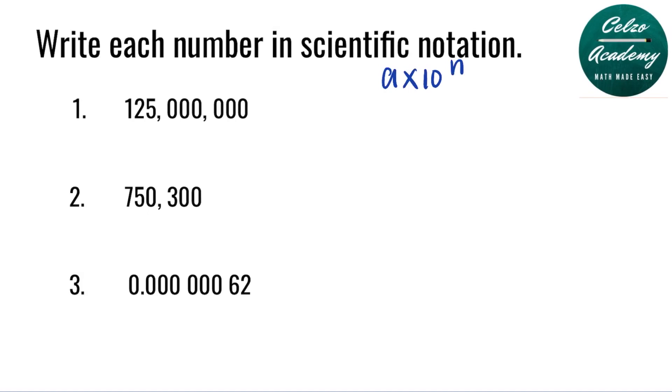Question number 1. 125 million. Since it is a whole number, that means that the decimal point is at the end of this number. Writing this in scientific notation, the decimal point should be right after the 1. This way, our a value will be 1.25. And then we have times 10 to the power of n. What do you think is the value for n?